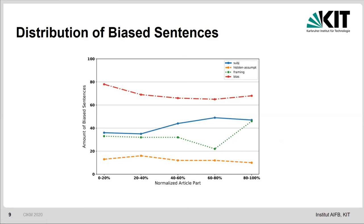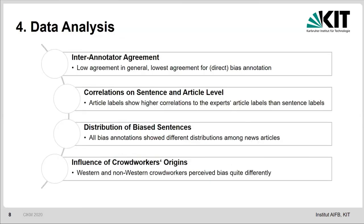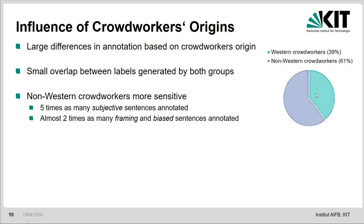Finally, we considered whether the crowd workers' origins — that is, the country where they come from — has an influence on the bias dimension annotations. We had about 40% of the crowd workers from Western countries and about 60% from non-Western countries. We found that there is a large difference in annotation based on the crowd workers' origin, and a small overlap between the labels generated by both groups. Quite interestingly, non-Western crowd workers in our study seem to be more sensitive with respect to bias — for example, there are five times as many subjective sentences annotated by non-Western workers, and almost twice as many framing and bias sentences.